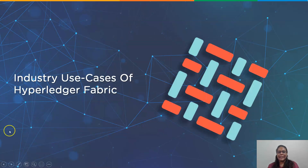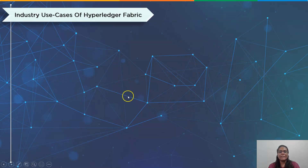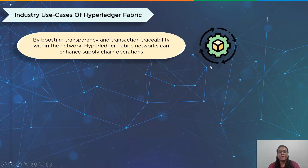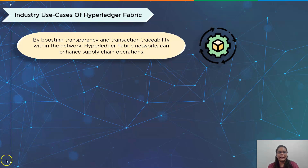The first industry use case is supply chains. Supply chains are vast, dispersed networks of suppliers, producers, and retailers. By boosting the transparency and traceability of transactions within the network, Hyperledger Fabric networks can enhance supply chain procedures. Companies with access to a Hyperledger Fabric network can see the same unchangeable data, enforcing responsibility and lowering the possibility of counterfeiting.